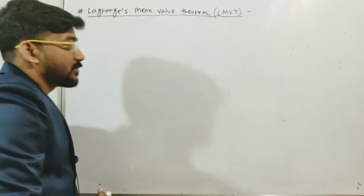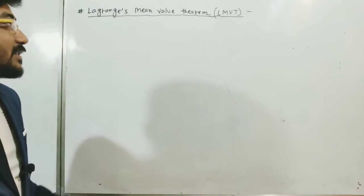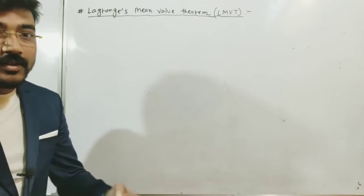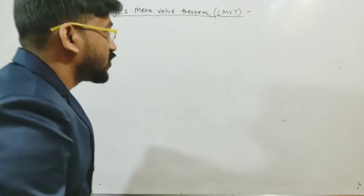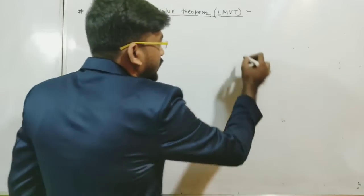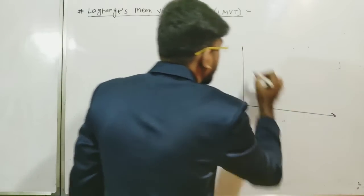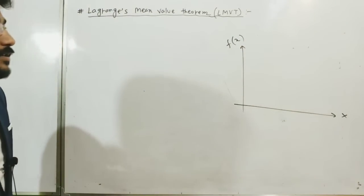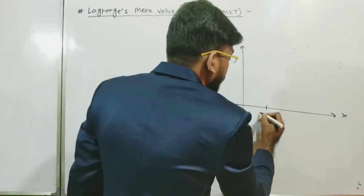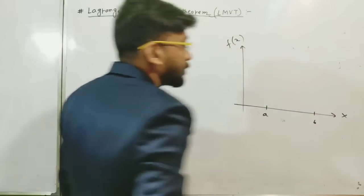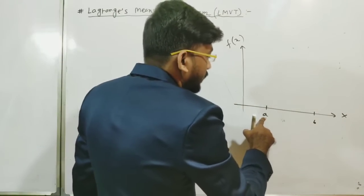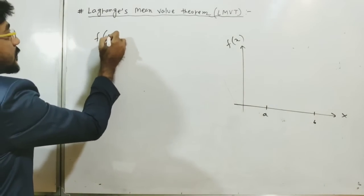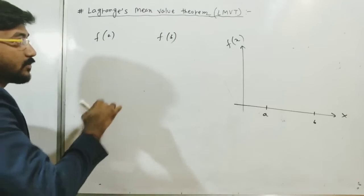I'm always interested in discussing things from a geometrical point of view, and then I'll go to the actual definition. So in the xy-plane, if I draw x and the function f(x) — the single variable case — and choose two points x = a and x = b, Rolle's Theorem requires that the functional values f(a) and f(b) satisfy a specific condition.